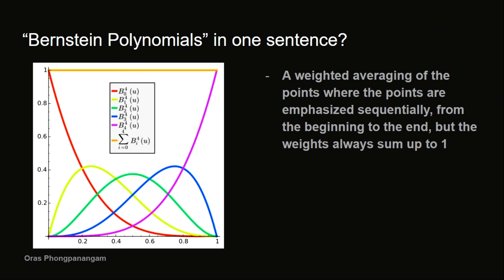So you can see how the curves, different curves correspond to how important the point is at each place in the curve, and you can see that the peaks, the peaks shift between the points. You start with a full emphasis on the first point, and then you shift to the second point, third point, fourth point, and then the last point. So yeah, that's the basic of what Bezier curve is.